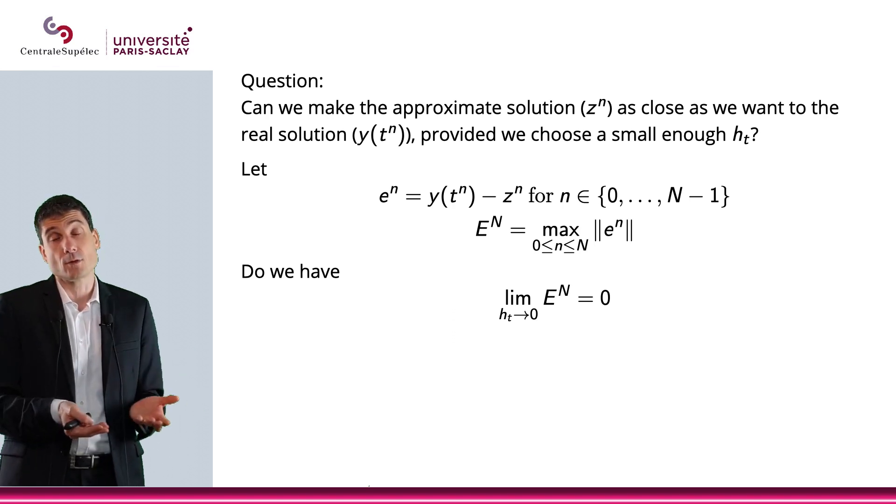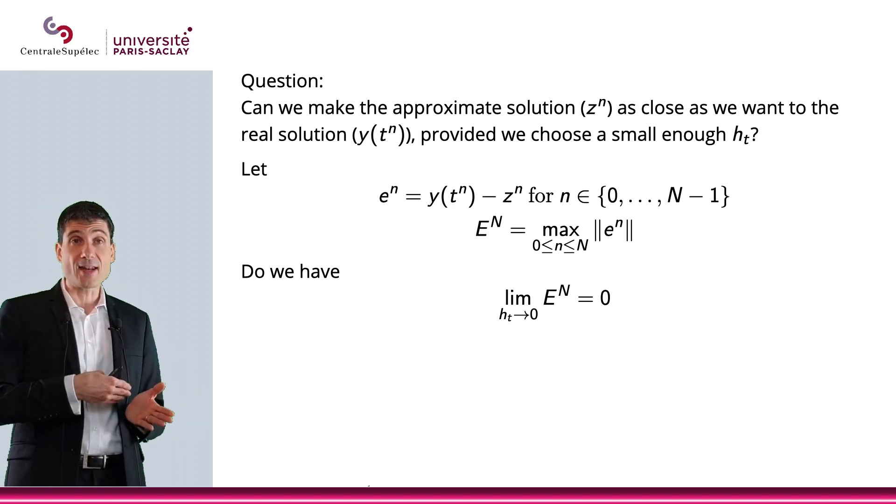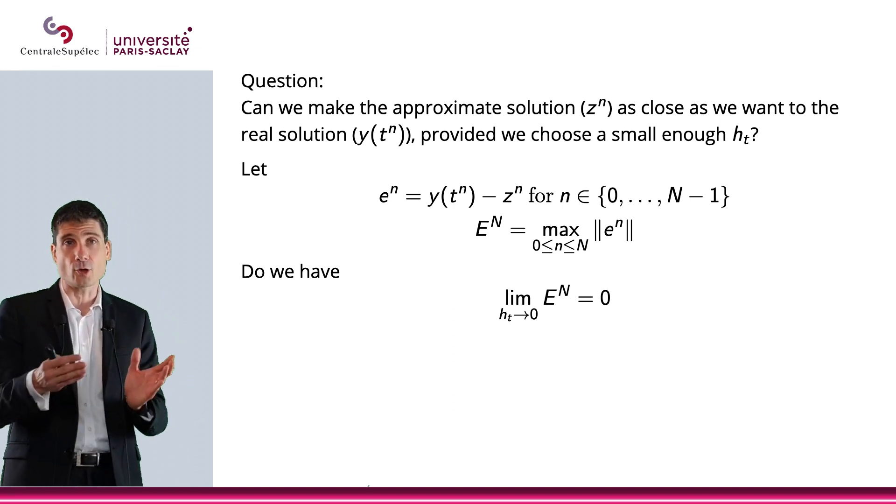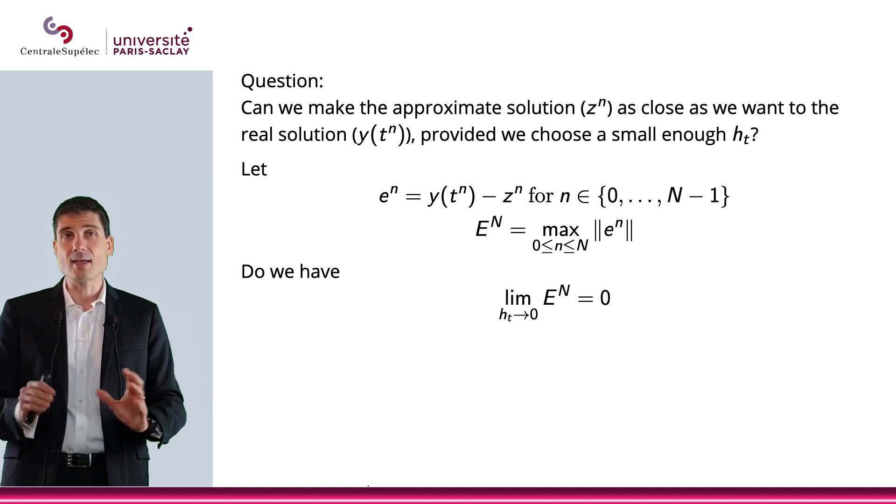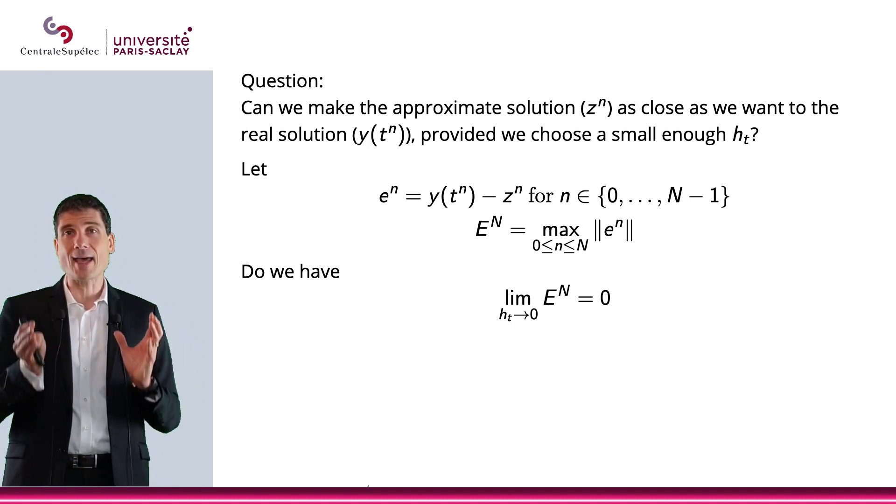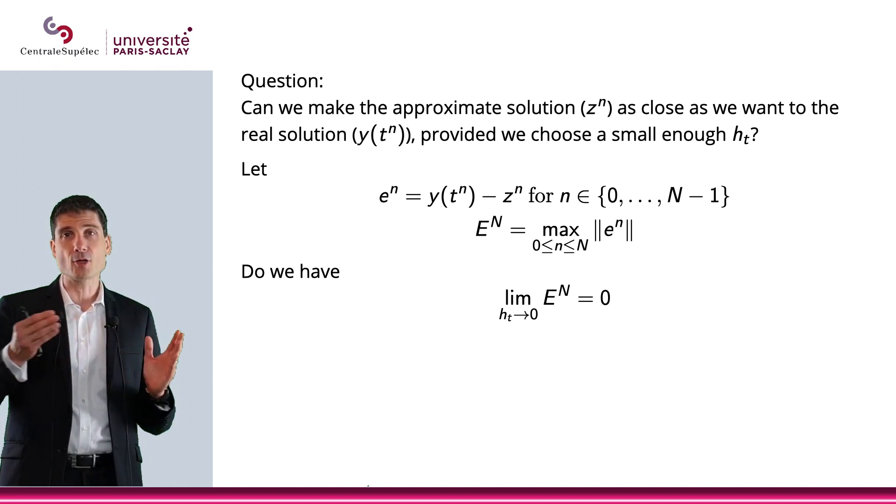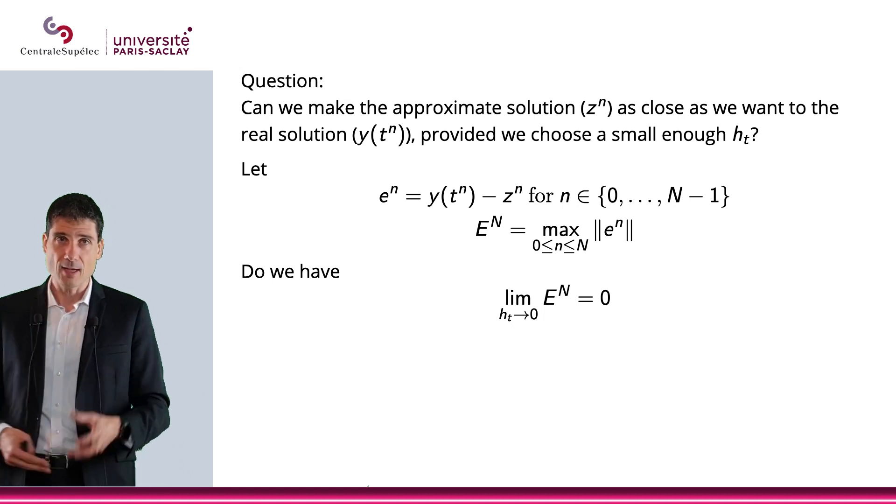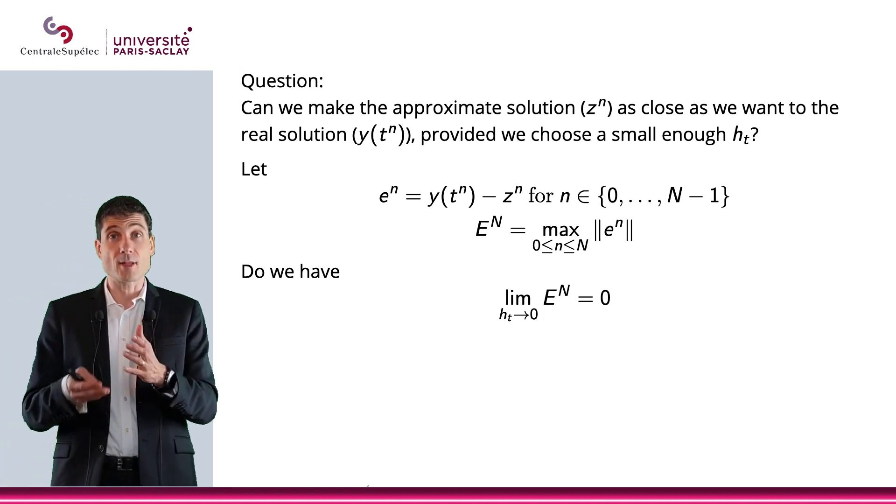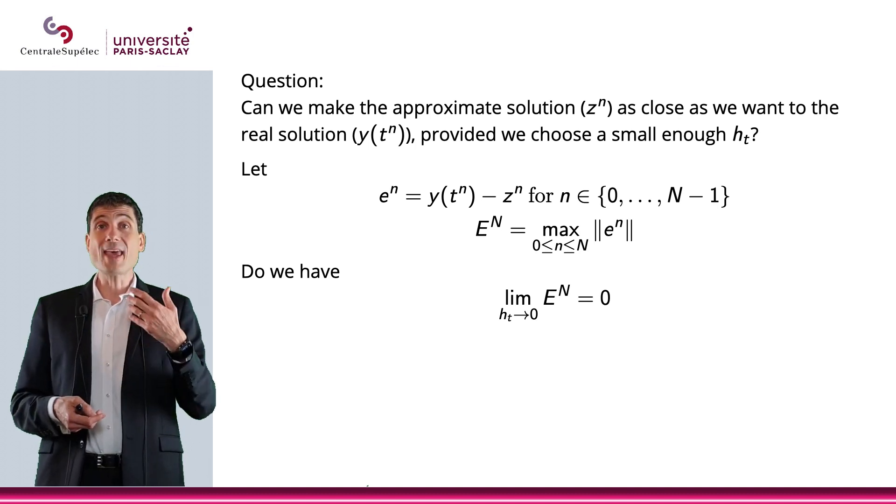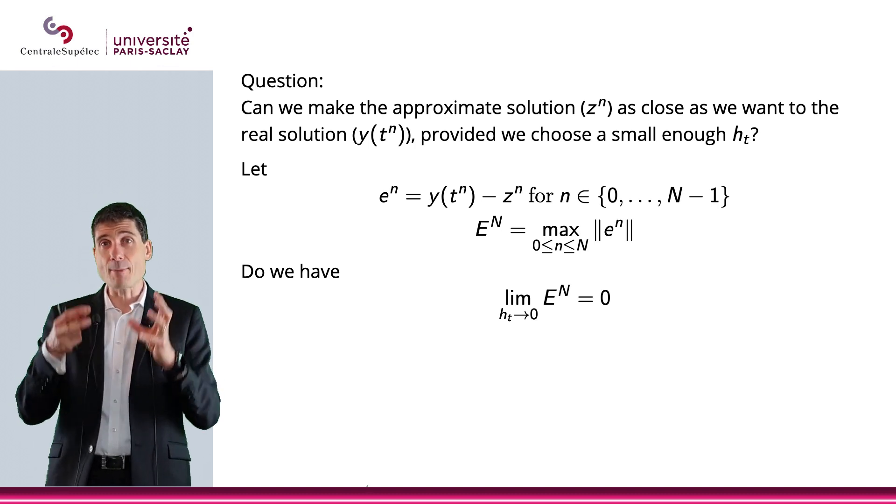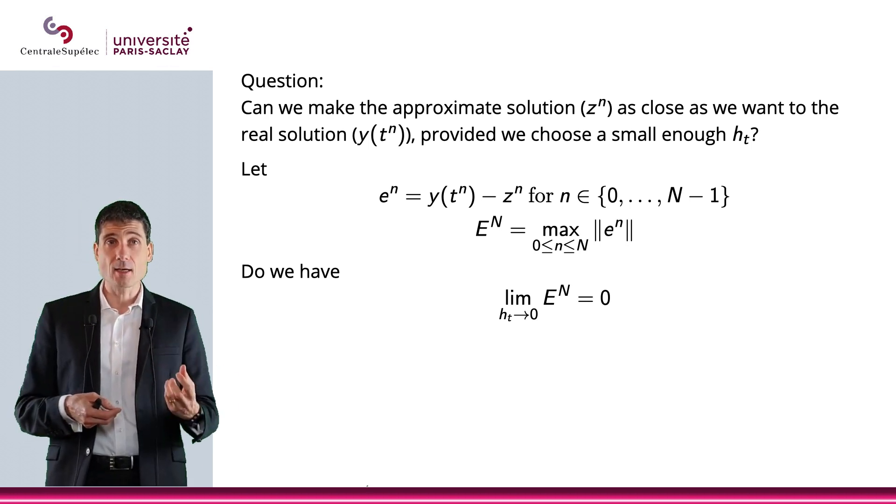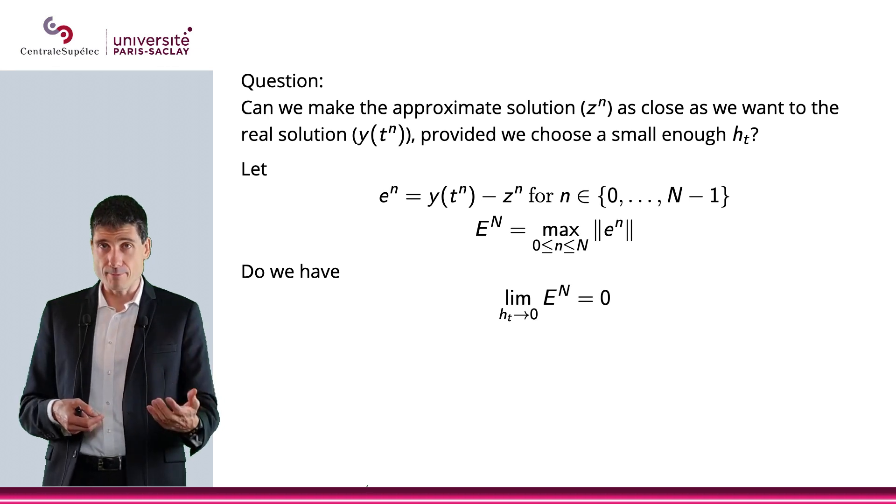And then as we go, obviously the error was increasing, but maybe it would be decreasing at some point. We don't know. What I'm saying is capital En is the maximum error I can get on my n plus 1 first step, so n step after the initialization. And obviously, the question that we would like to address is, do we have that error, capital En, go to 0 when the step HT goes to 0?